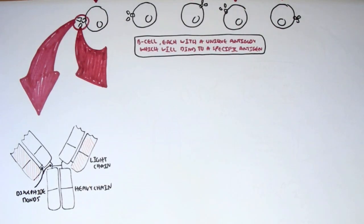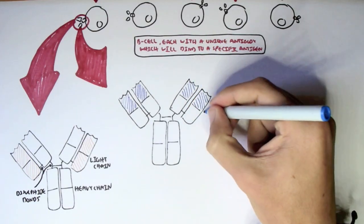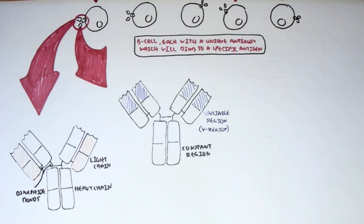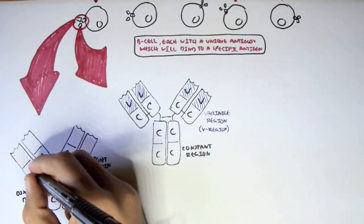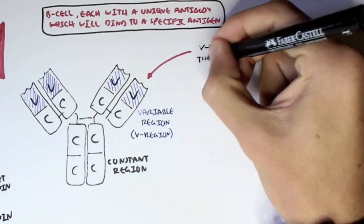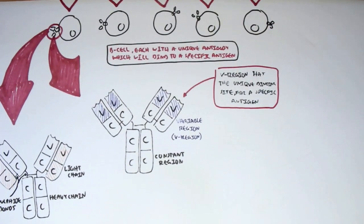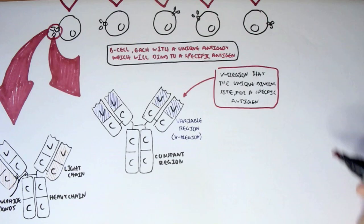Another way of looking at the antibody is that it contains a variable region — the blue areas, also known as V-regions — and a constant region. There are constant regions (CCC) and variable regions (VVV), with more constant regions on the heavy chain. The variable region has the unique binding site for a specific antigen — it determines what type of antigen the antibody binds to. The constant region determines what class the immunoglobulin is, usually immunoglobulin M in immature B-cells.